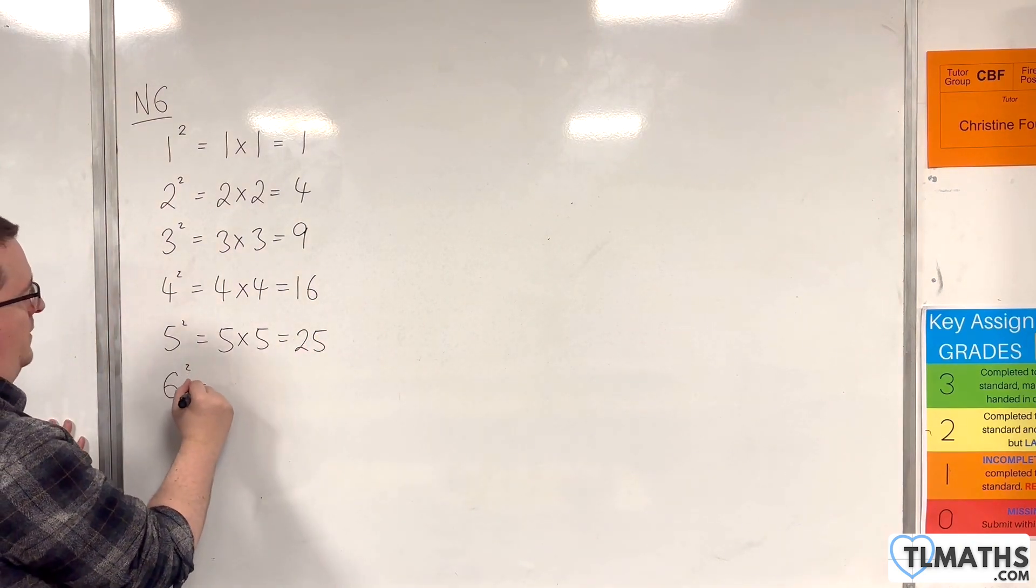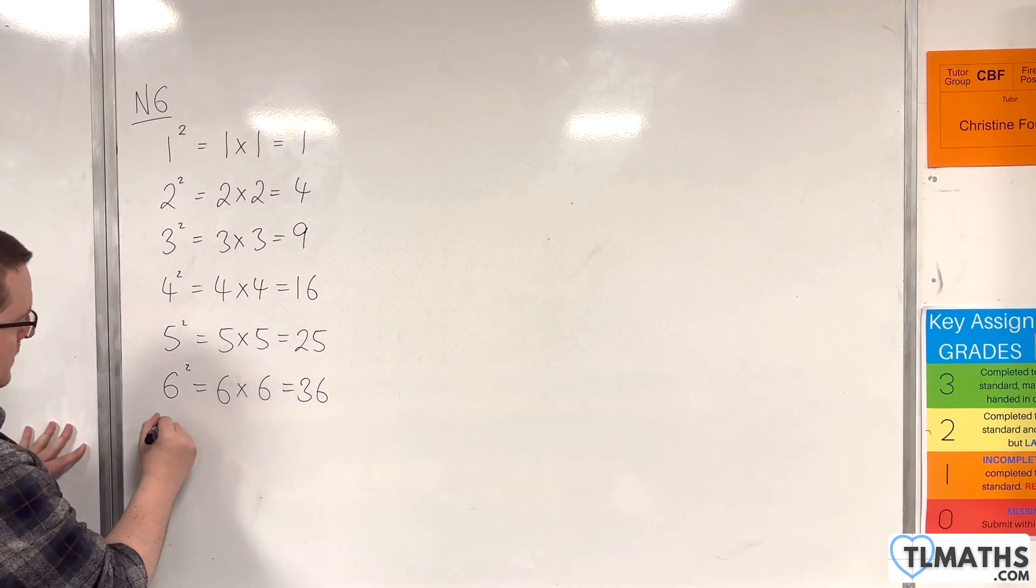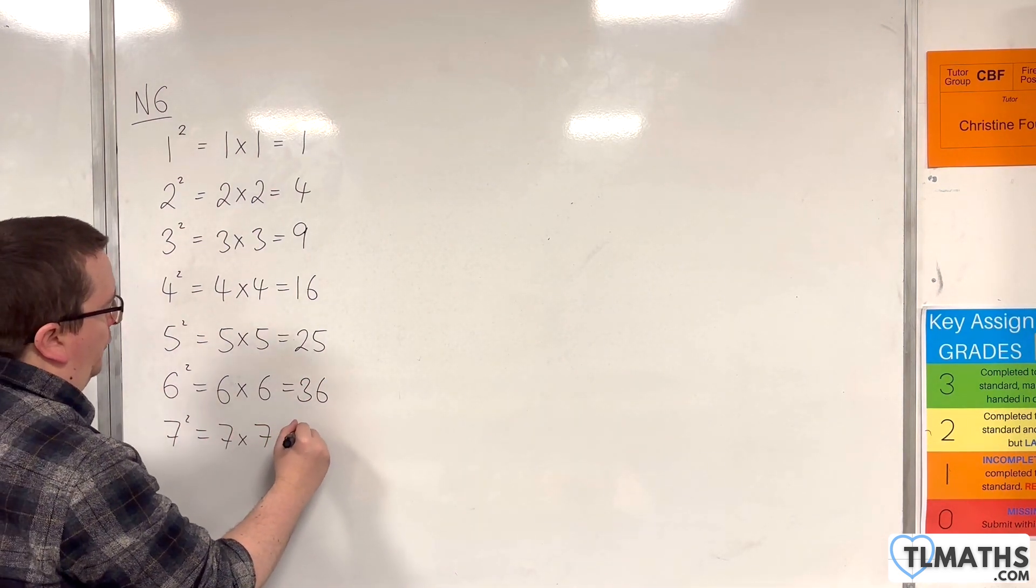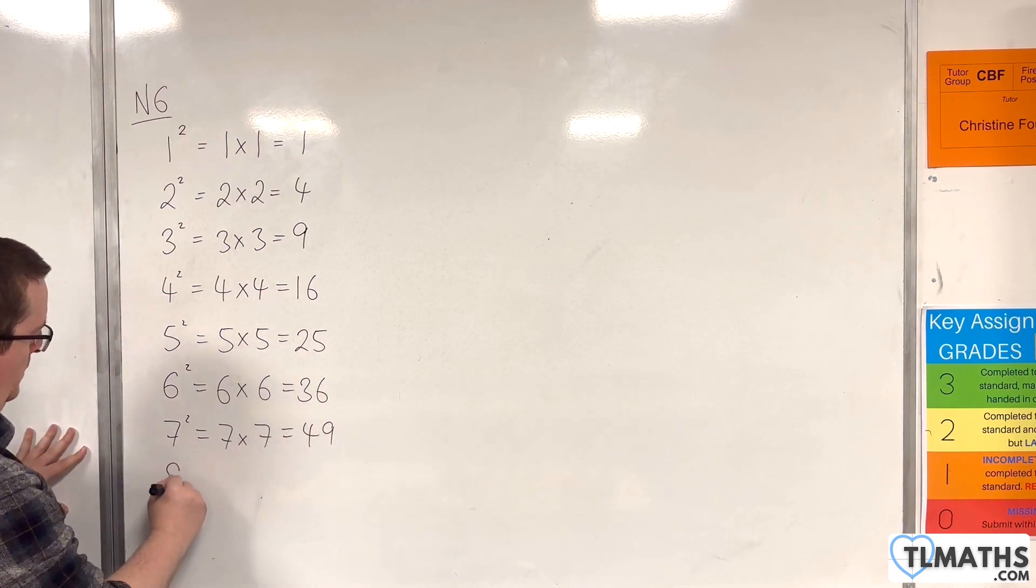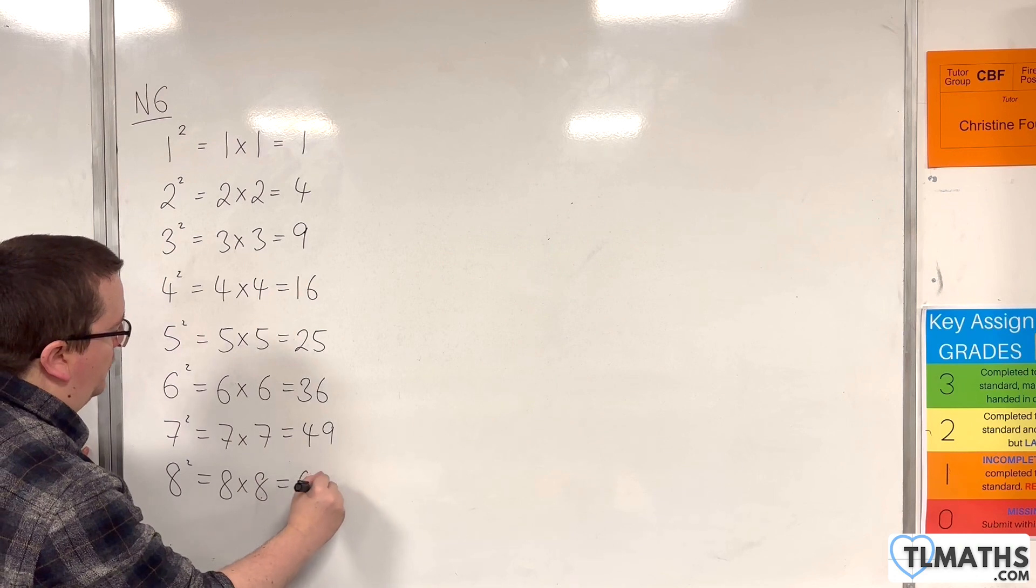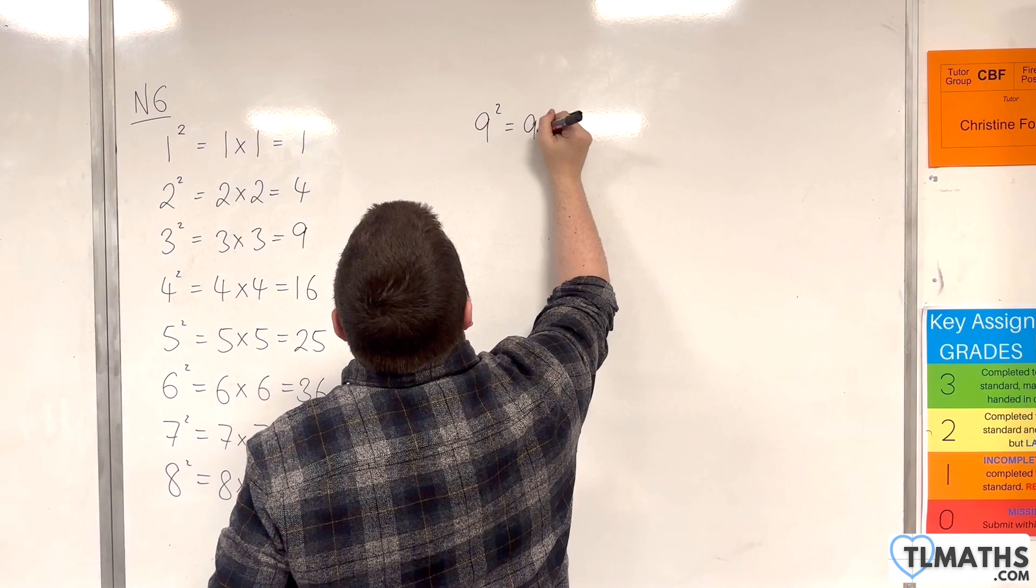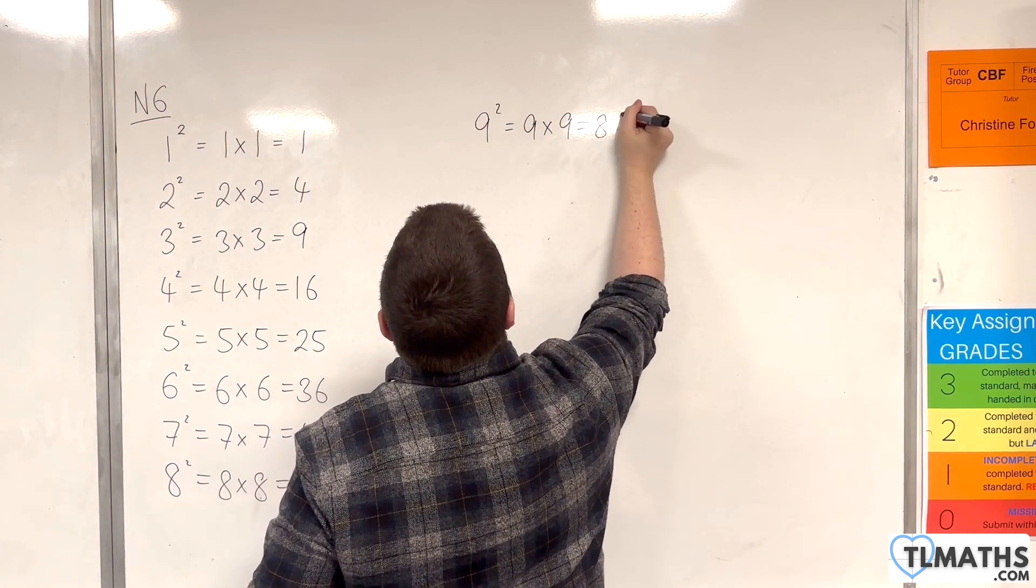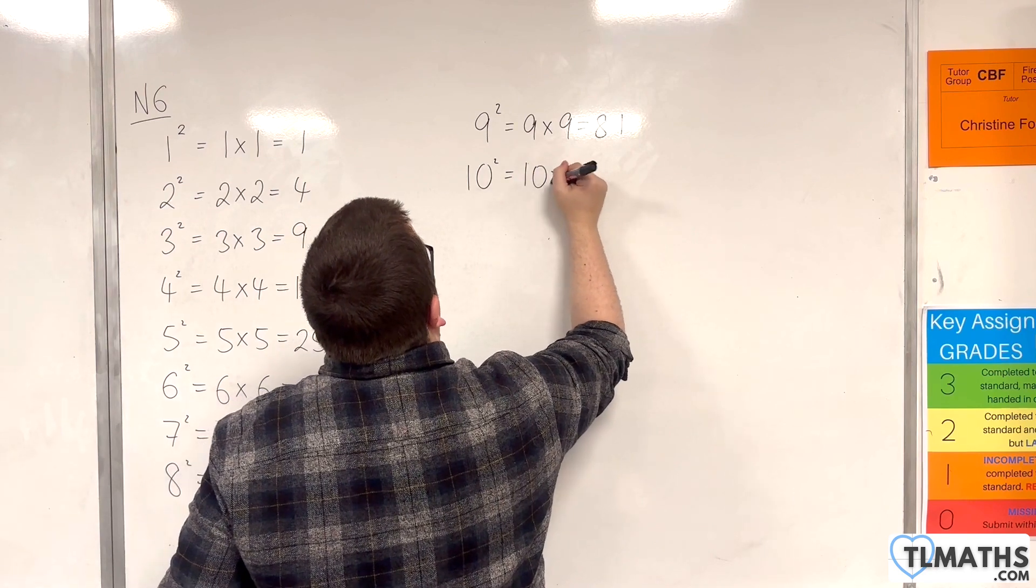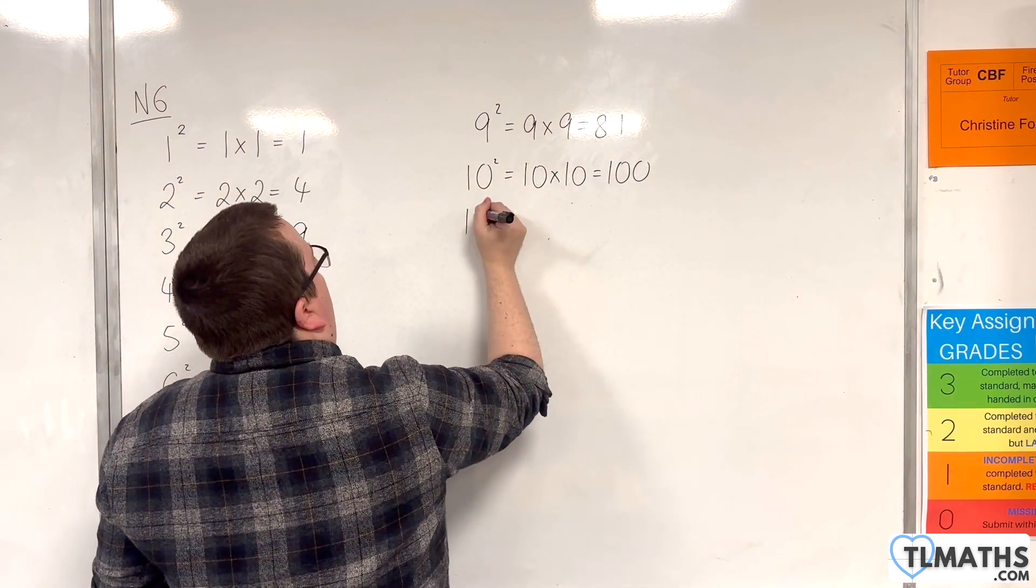6 squared is 6 times 6, which is 36. 7 squared is 7 times 7, which is 49. 8 squared is 8 times 8, which is 64. We have 9 squared, so 9 times 9, which is 81. 10 squared is 10 times 10, so 100.